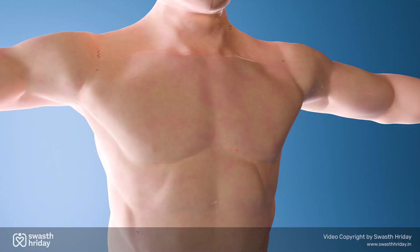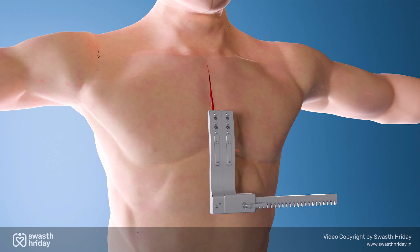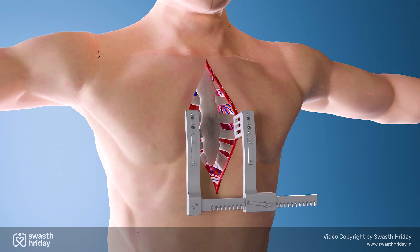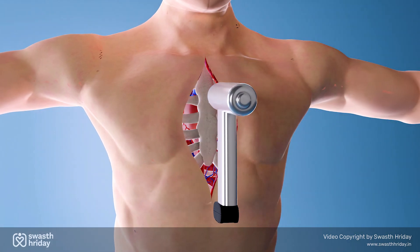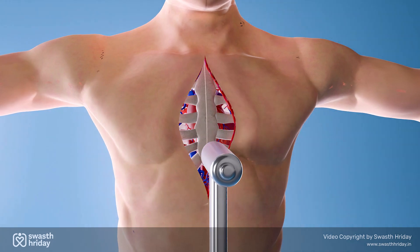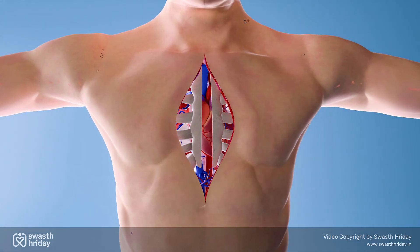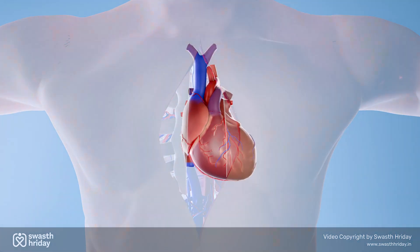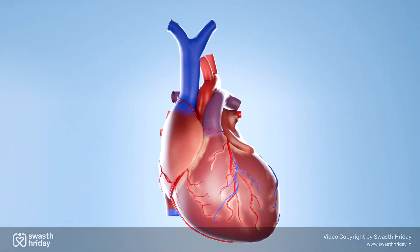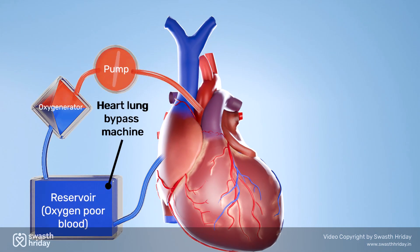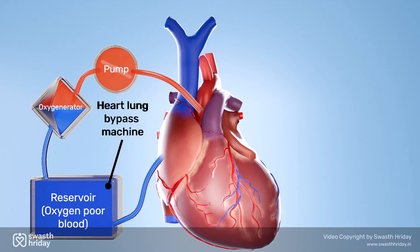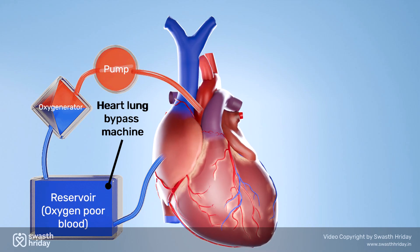The surgery begins with the surgeon making a straight incision along the center of the chest. A retractor is placed to hold the chest open. Using a specialized surgical saw, the surgeon then divides the breastbone vertically. Next, the patient is connected to a heart-lung machine, allowing the surgeon to safely stop the heart.